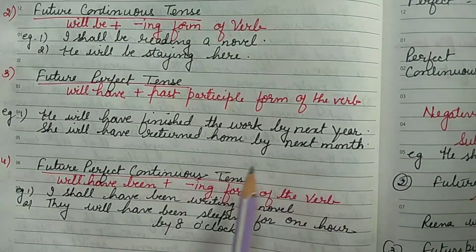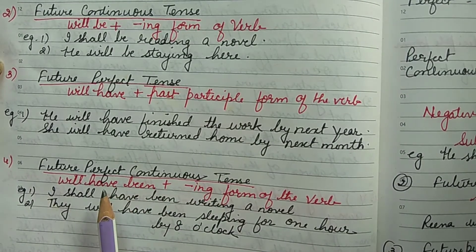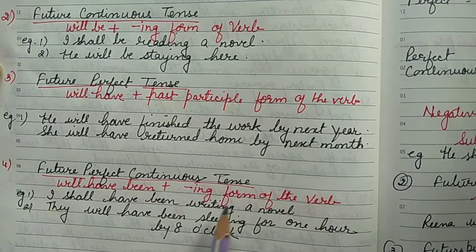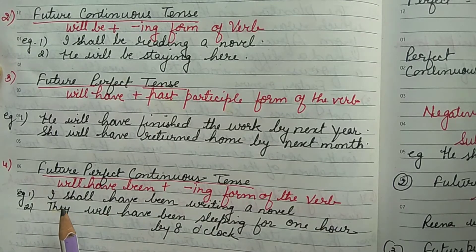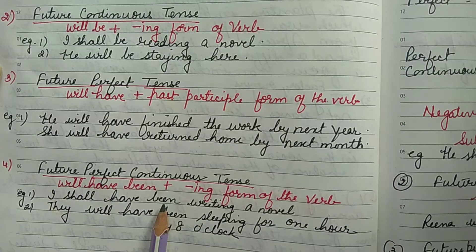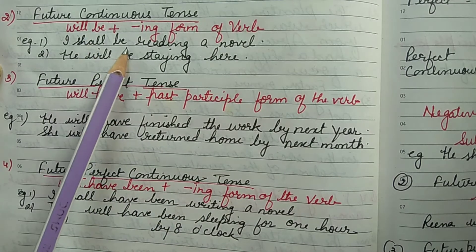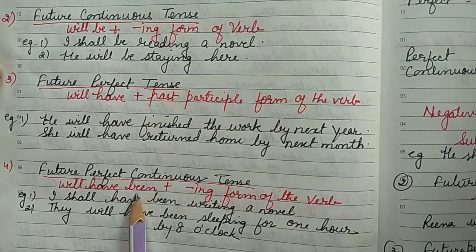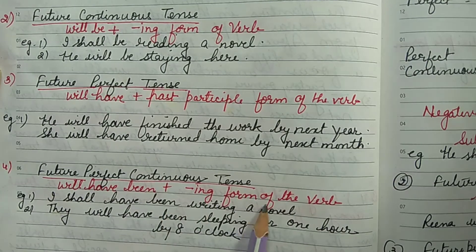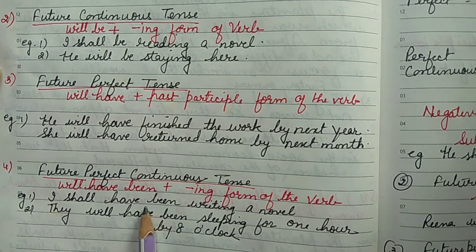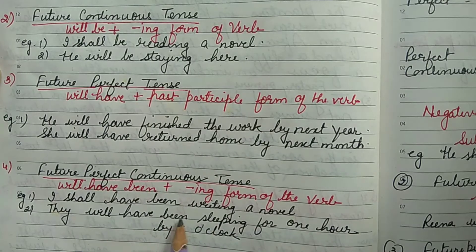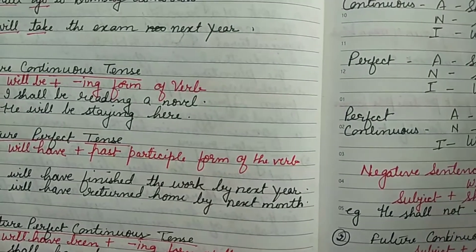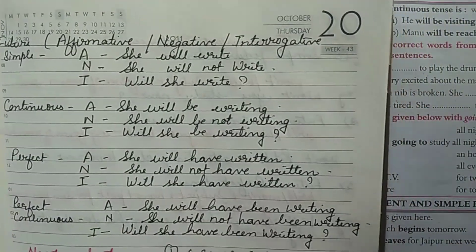The future perfect continuous tense uses the structure: will/shall + have + been + ing form of the verb. Note that in the future continuous we used 'be,' but in the perfect continuous it changes to 'been.' For example: 'I shall have been writing a novel'; 'They will have been sleeping for one hour by eight o'clock.' These structures make it easier to understand the different future forms.